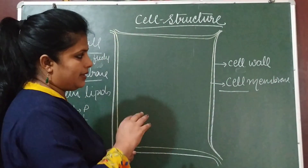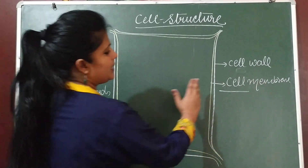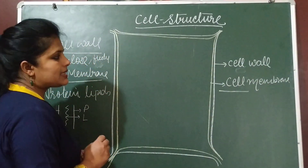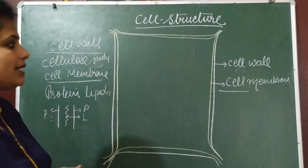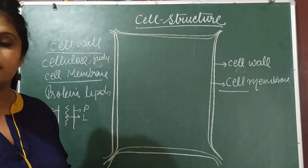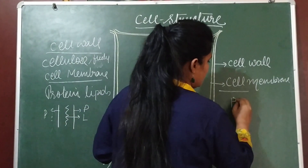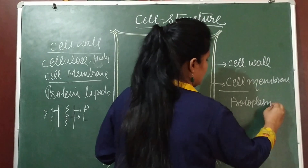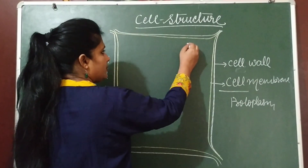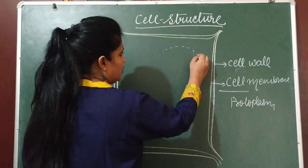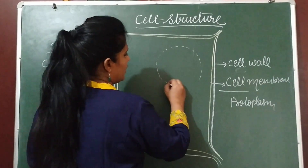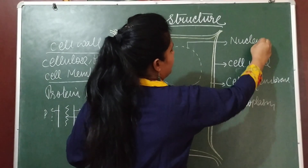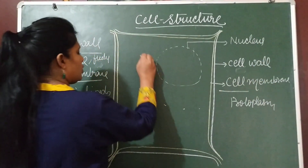Cell membrane separates the cell from the outer environment. Inside the cell membrane there is a liquid material that is called protoplasma. We are going to discuss the nucleus in detail, but before that, let us understand what protoplasma is.